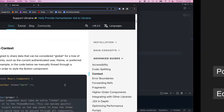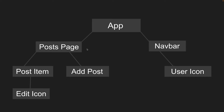Let's look at a practical example. Say we have a social media app that displays a list of posts. We have a nav bar where we want to display a user icon if they're signed in. We also have a post page where each post item is its own component with an edit icon that only shows if the current post's user ID matches the signed-in user ID. And there's an add post form for signed-in users.